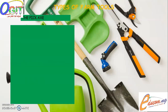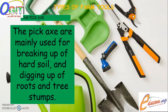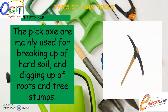The first type of farm tool I will be talking about is the pickaxe. The pickaxe is mainly used for breaking up hard soil and digging up roots and tree stumps. It is made up of a long wooden handle with a double-edged metal blade attached to the handle through a loop. The head of the pickaxe is made up of two edges — one end of the blade is pointed while the other end is flat and sharp-edged.